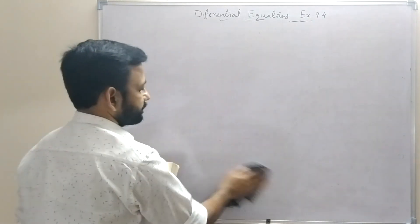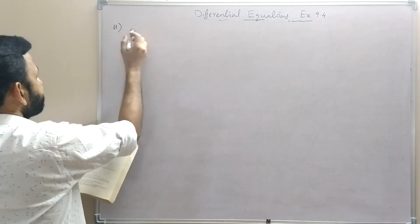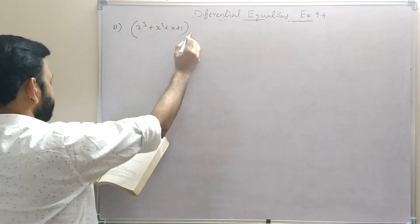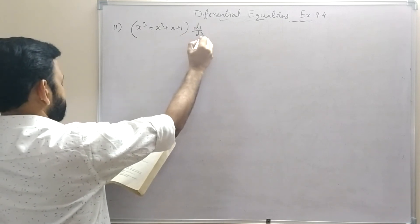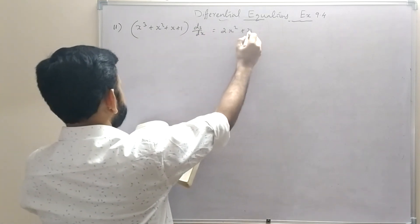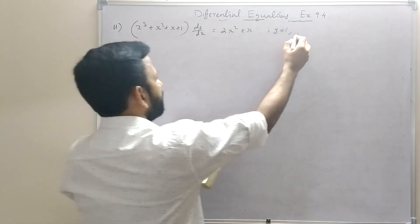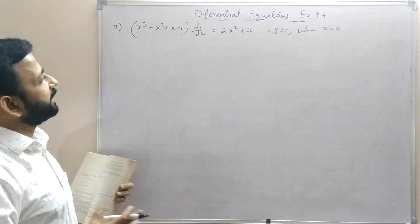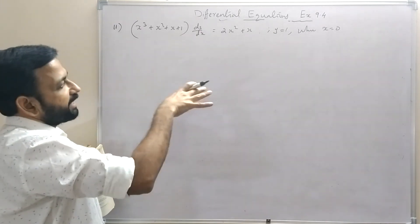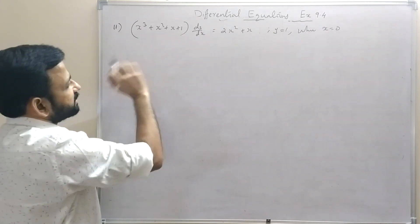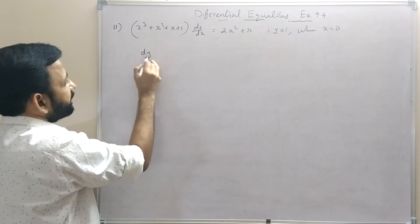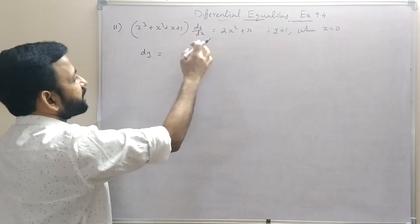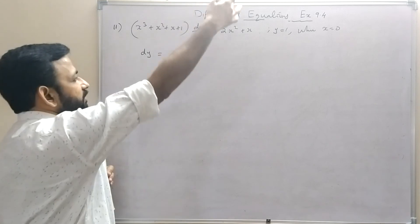For question 11: x³ + x² + x + 1 = x²(x + 1) + (x + 1) = (x + 1)(x² + 1). So dy = (2x² + x)/[(x+1)(x² + 1)] dx. Using partial fractions: (2x² + x)/[(x+1)(x² + 1)] = A/(x+1) + (Bx + C)/(x² + 1).